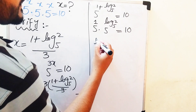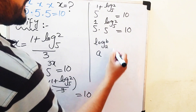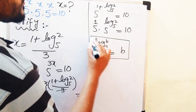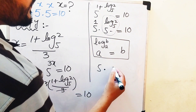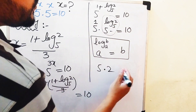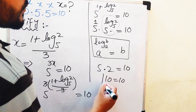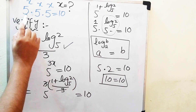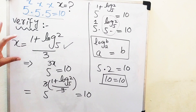We now apply the logarithmic identity: a to the power of log base a of b equals b. Using this on the term 5 to the power of log base 5 of 2, the output is simply 2. So we get 5 times 2 equals 10, and 10 equals 10. This confirms that our value of x is correct, and x equals (1 plus log base 5 of 2) over 3 is the only solution.